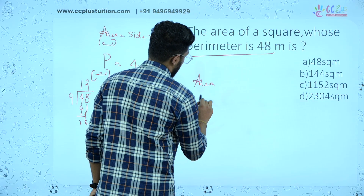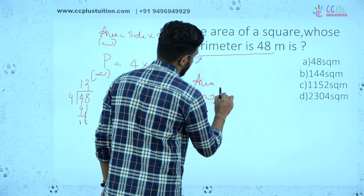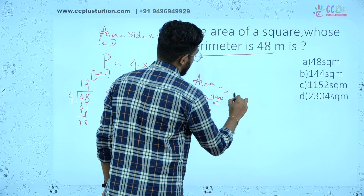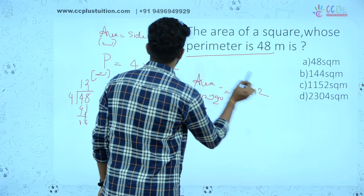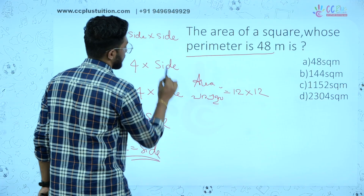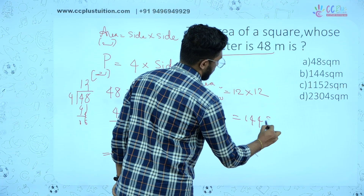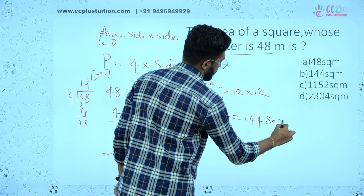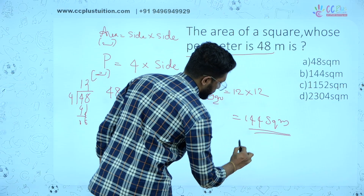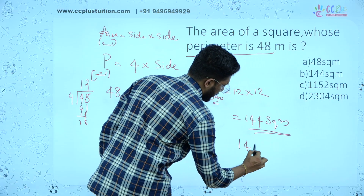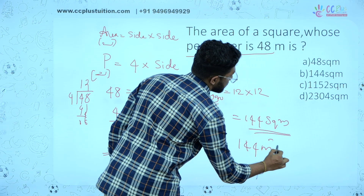What is the area? Area formula: side into side. 12 into 12 equals 144 square meters. The answer is 144 square meters.